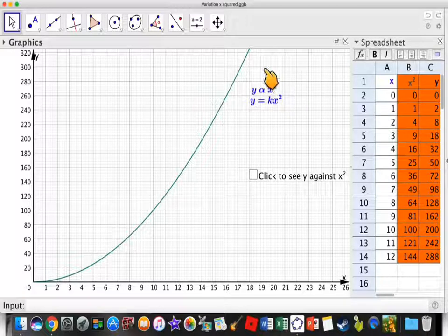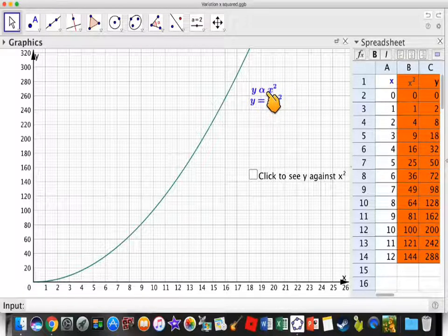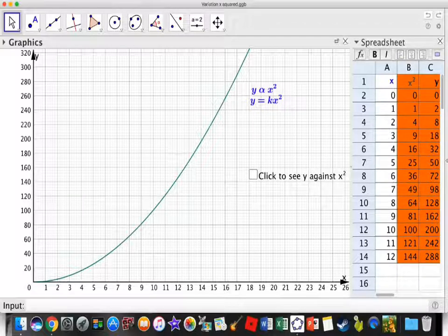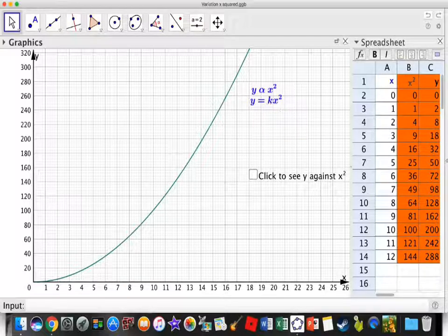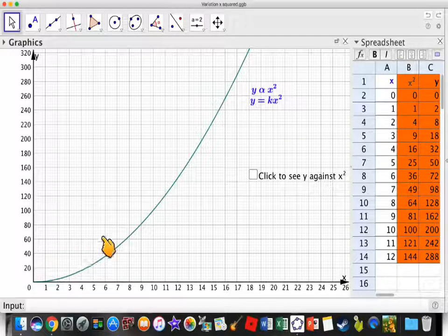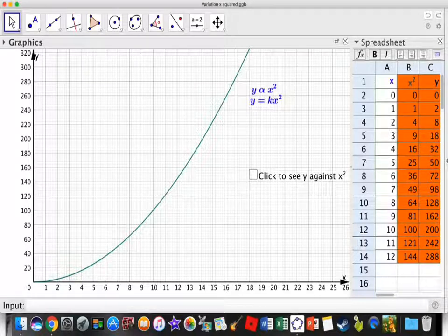Here we've got that Y is proportional to X squared, which means that Y will be equal to KX squared. So if we were to plot a graph of the points, X against Y,